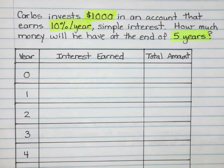And then it says how much money will he have at the end of five years? So that's how long he's going to leave it invested for. He's going to put $1,000 in this account, leave it there for five years and then take it out at the end and see how much money he has.